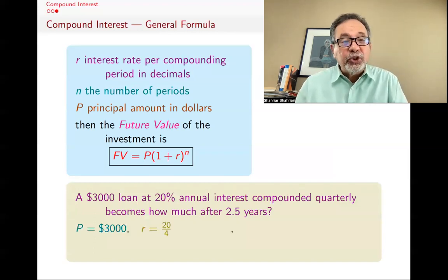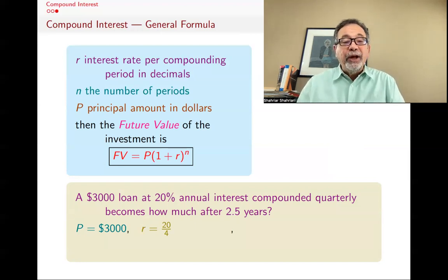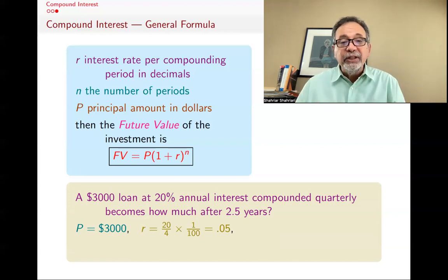The interest rate per compounding period, well, it's 20 divided by 4, because 20% divided by 4, but that's going to be in percentage. I have to write it in decimals, so I also have to multiply it by 1 over 100, divide by 1 over 100, and you get 0.05. So every quarter, a quarter is a quarter of the year, so the interest rate is going to be 0.05.